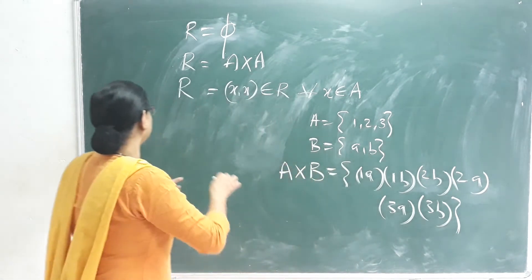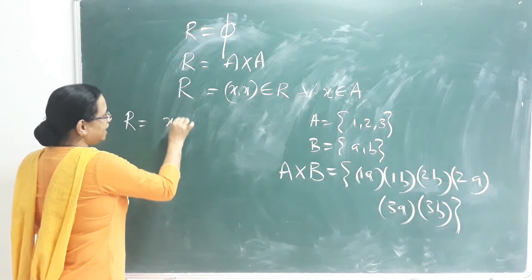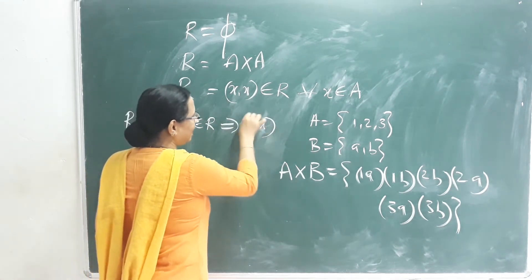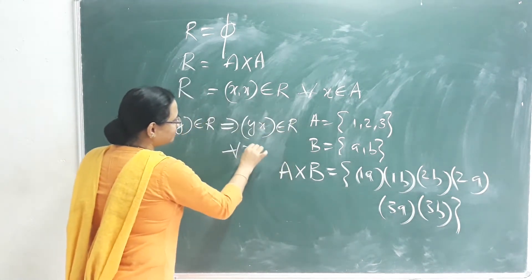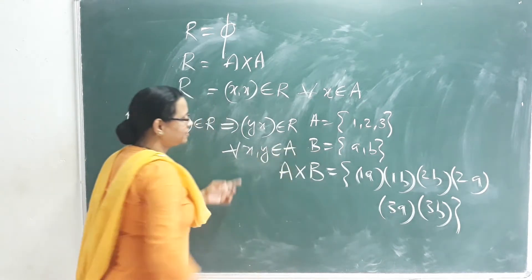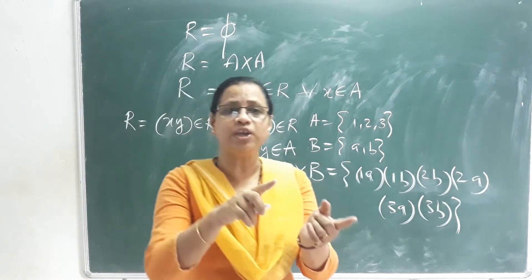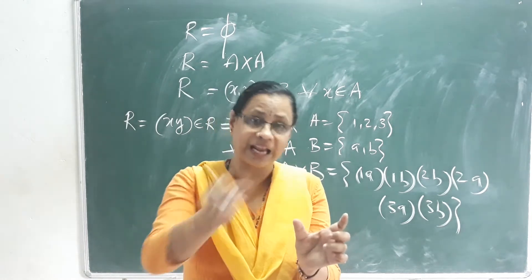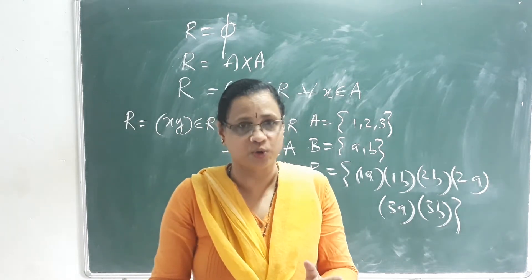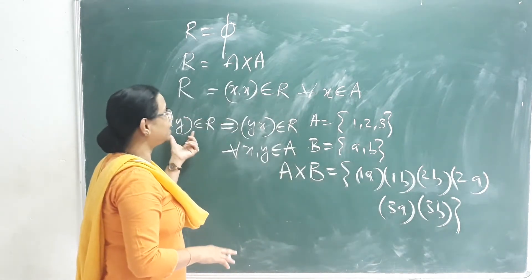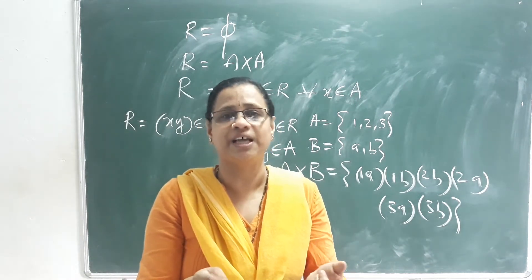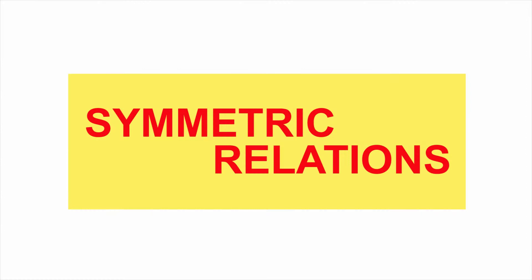Next is the Symmetric Relation. A relation R is symmetric if (x, y) is an element of R, which implies (y, x) is also an element of R, for all x, y that are elements of A. If x relates to y, then y also relates to x. We call this a symmetric relation.